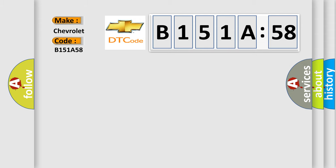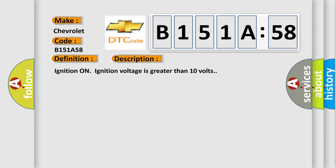The basic definition is Anti-lock brake system ABS or traction control system TCS brake sensor circuit. And now this is a short description of this DTC code. Ignition on, ignition voltage is greater than 10 volts.